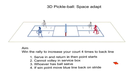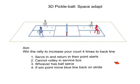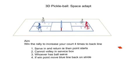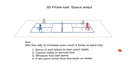Here is the summary of the key rules of this game. First, you must make sure that you serve and the ball is returned, then the point starts. So there is no service error and no return error. You cannot volley in the service box area. The ball must be allowed to bounce there. Whoever has the ball can serve because there is no advantage given to the serve. If you win the point, your back line increases by one stride, working your way back four times to the baseline.